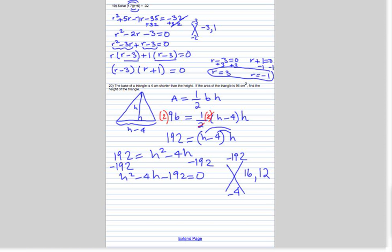We want to pick the bigger one to be the negative, because negative 4 is what we want when we add the two numbers. So negative 16 plus 12 does give us negative 4.